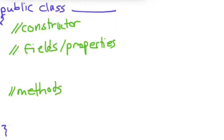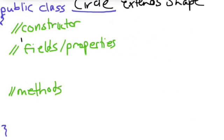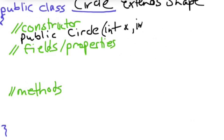Now we'll create a circle class. Circle extends shape. Okay. Constructor public circle. And the circle constructor will probably take int x, int y for the center position, and int r for the radius, because that's what we need to specify a circle.